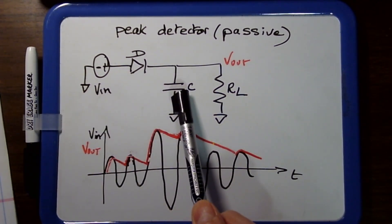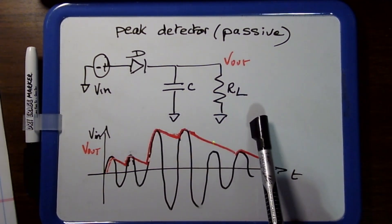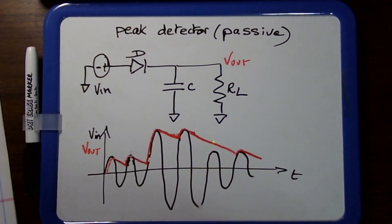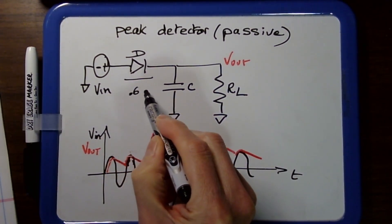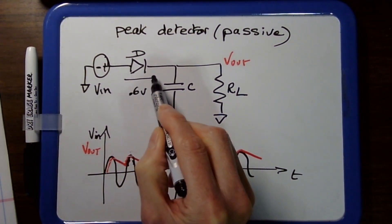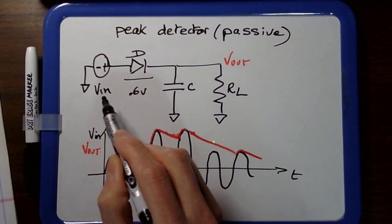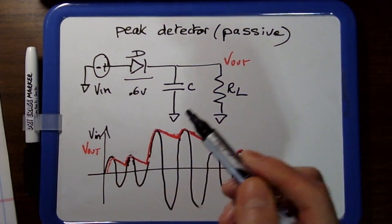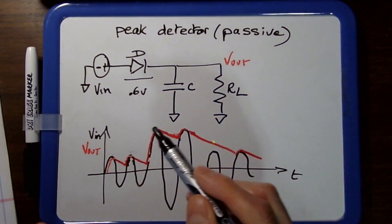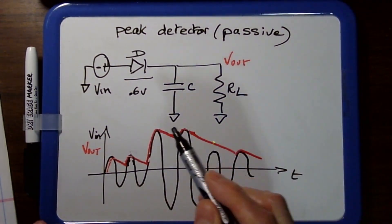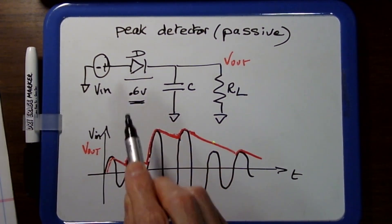The passive peak detector has a source — a sine wave or audio signal — a diode, a capacitor, and a load. The first problem with this design is the 0.6 to 0.7 volt drop across the diode. This means the input signal has to be at least 0.6 volts, though typically it would be much more, like 10 or 100 volts. That diode drop is the first problem.